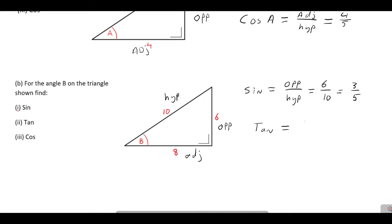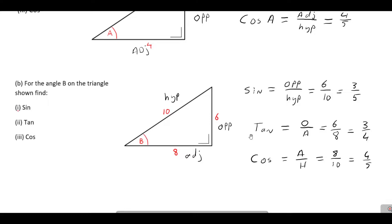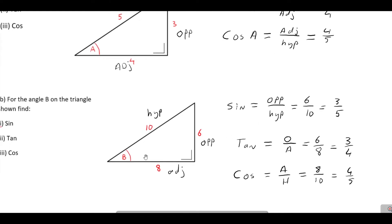Tan is opposite over adjacent, which is six over eight. Dividing both by two gives three over four. Cosine is adjacent over hypotenuse: eight over ten, which simplifies to four over five. Comparing both triangles, we get the exact same values, showing that for a given angle — say forty degrees — you'll always get the same value for tan, sine, and cosine regardless of the triangle size.